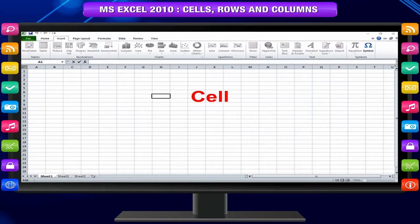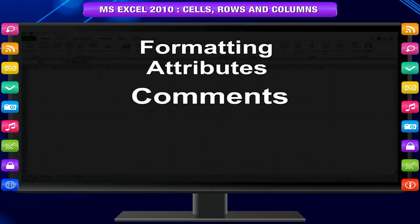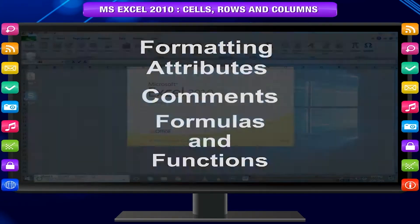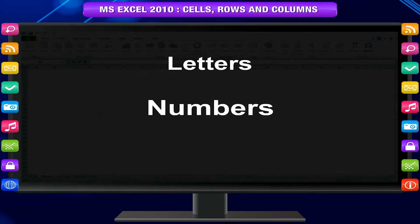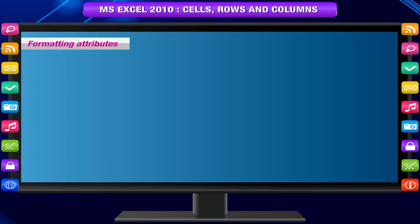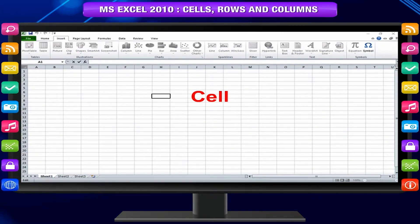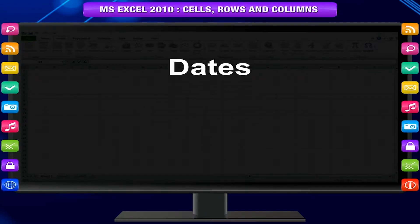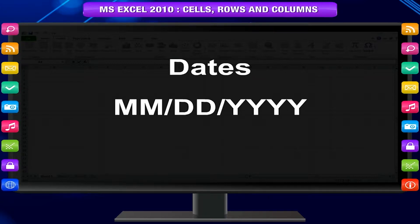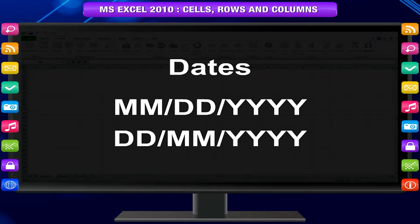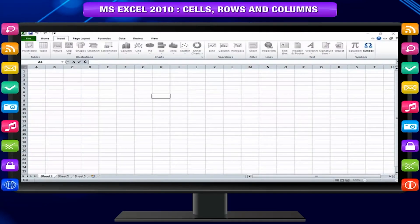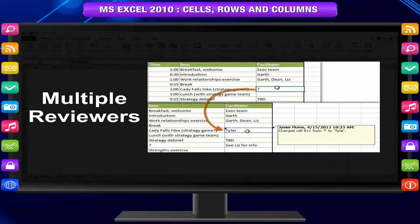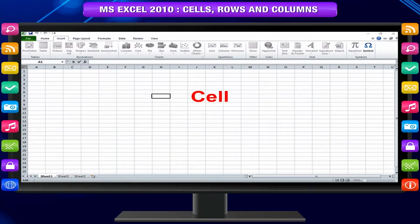Cell content — each cell can contain its own text, formatting attributes, comments, formulas, and functions. Text: cells can contain letters, numbers, and dates. Formatting Attributes: cells can contain formatting attributes that change how letters, numbers, and dates are displayed — for example, dates can be formatted as MM-DD-YYYY or DD-MM-YYYY. Comments: cells can contain comments from multiple reviewers. Formulas and functions: cells can contain formulas and functions that calculate cell values.